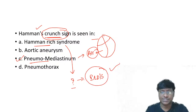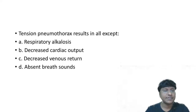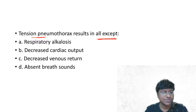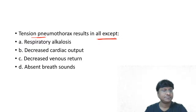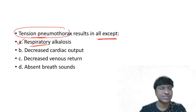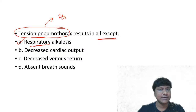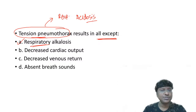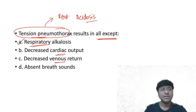Tension pneumothorax results in all of the following except respiratory alkalosis. In tension pneumothorax, CO2 washout does not occur, so these individuals develop respiratory acidosis. Tension pneumothorax also causes decreased venous return, decreased cardiac output, and completely absent breath sounds.